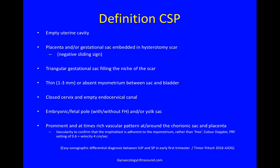The vascularity confirms that the trophoblast is adherent to the myometrium rather than free. You use colour Doppler at a PRF of about 0.6, which is equivalent to a velocity of 4 centimetres per second.